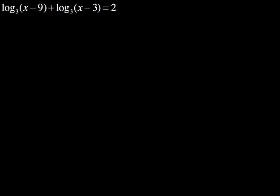Notice our base is 3 in each one of them, so when we combine the x minus 9 and x minus 3 as our product, that's just going to be rewritten as log base 3 times the quantity x minus 9 times the quantity x minus 3, still equaling 2.